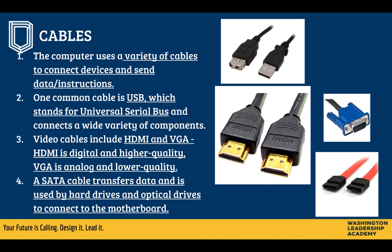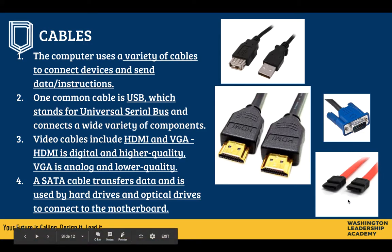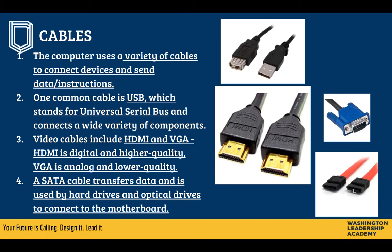The two most common video cables are HDMI and VGA. HDMI is digital and higher quality — it also carries audio. VGA is analog and lower quality, used on older technology like some TVs and smart boards. HDMI is the one you would want. A SATA cable transfers data and is used by hard drives and optical drives to connect to the motherboard. You can remember that because SATA rhymes with data — SATA sends data.